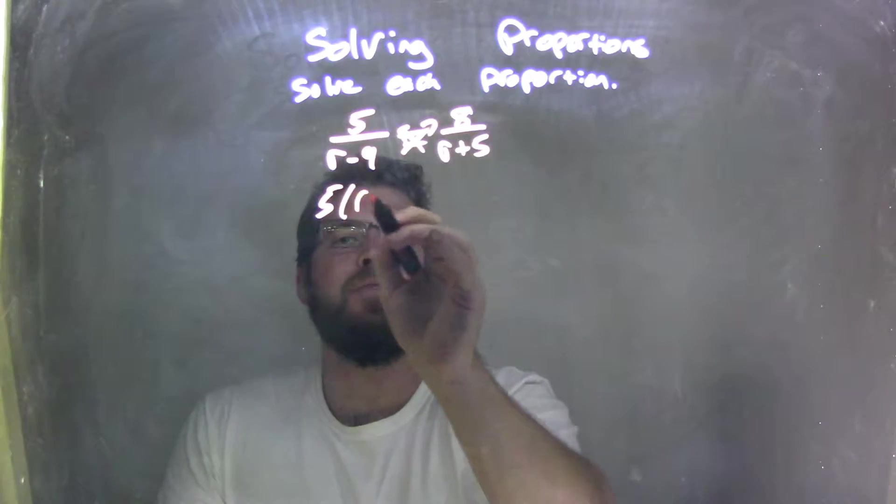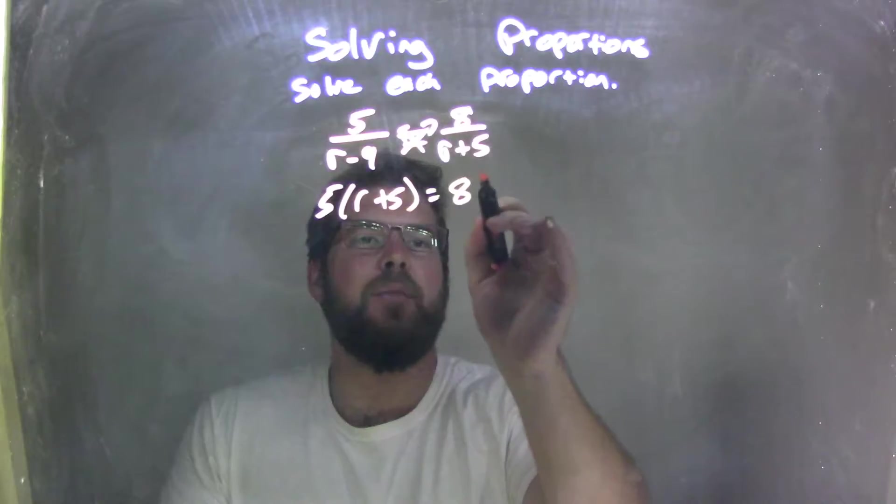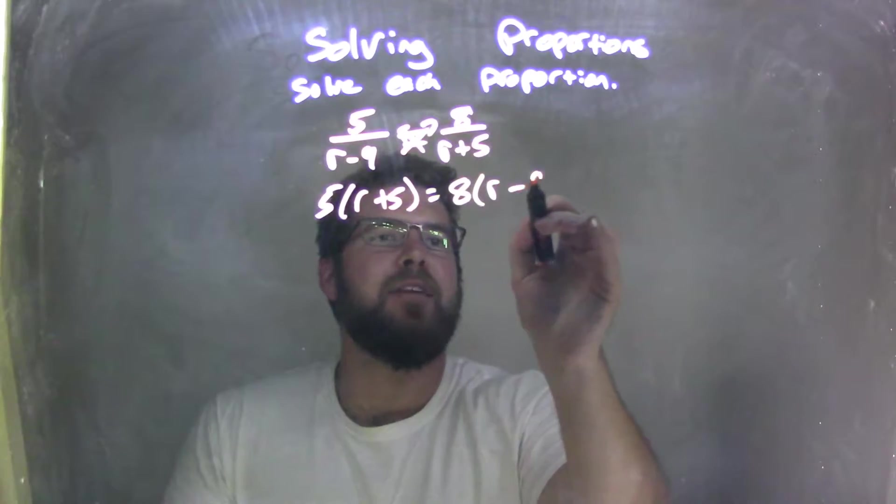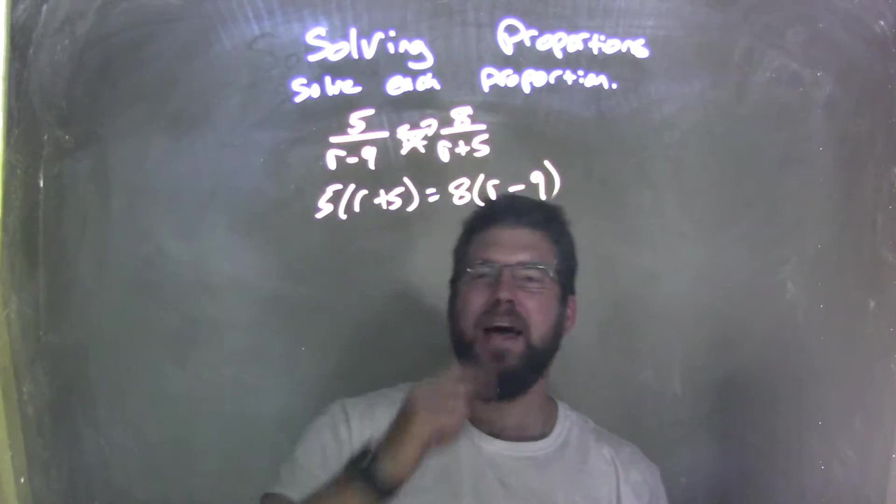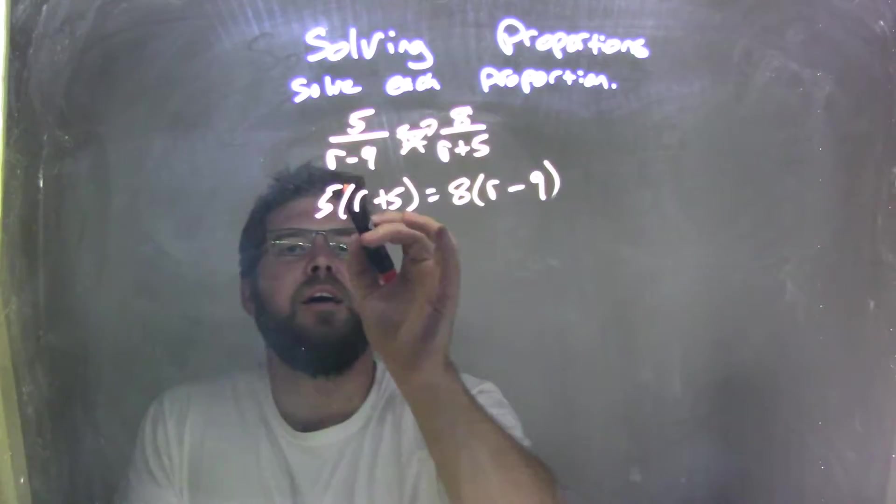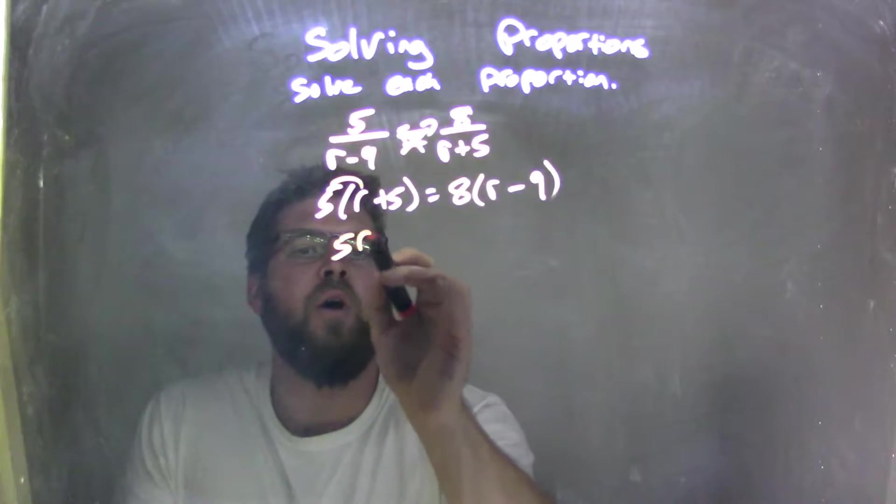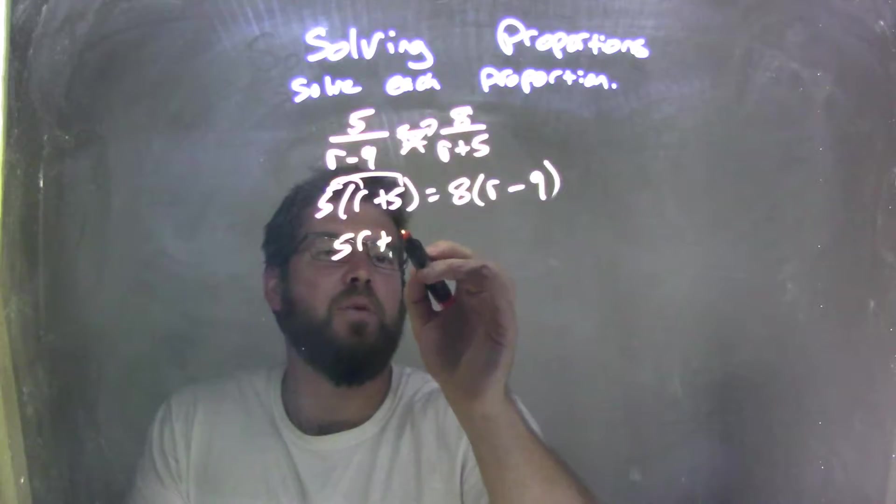So I have 5 times r plus 5 on the left equals 8 times r minus 9. Well, now we've got to distribute. 5 times r is 5r, and 5 times 5 is 25.